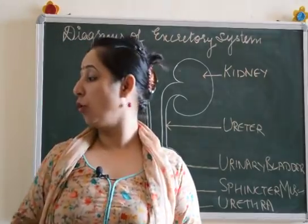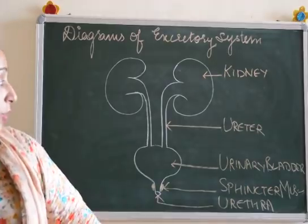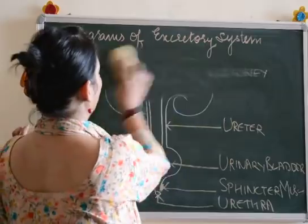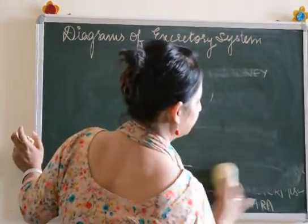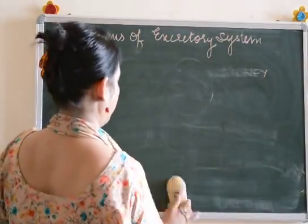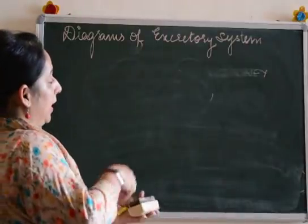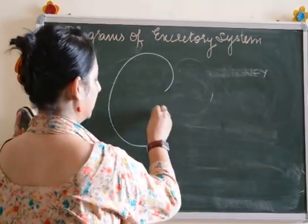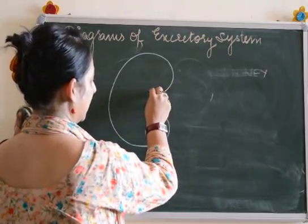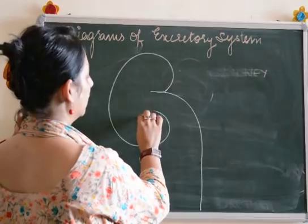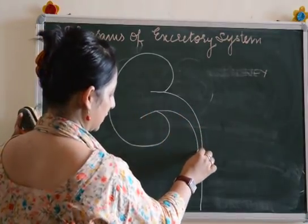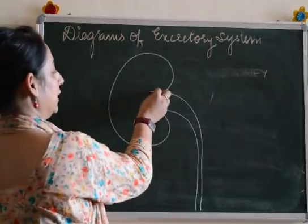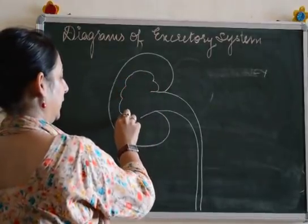Our next diagram is the structure of a kidney. We are going to draw the structure of this kidney as an enlarged longitudinal view. Again draw a bean-shaped kidney, a bit big in size. Then this tube coming out as we had made in the previous diagram. Now the kidney is divided into two parts — we will divide it into two parts with a partition like this.